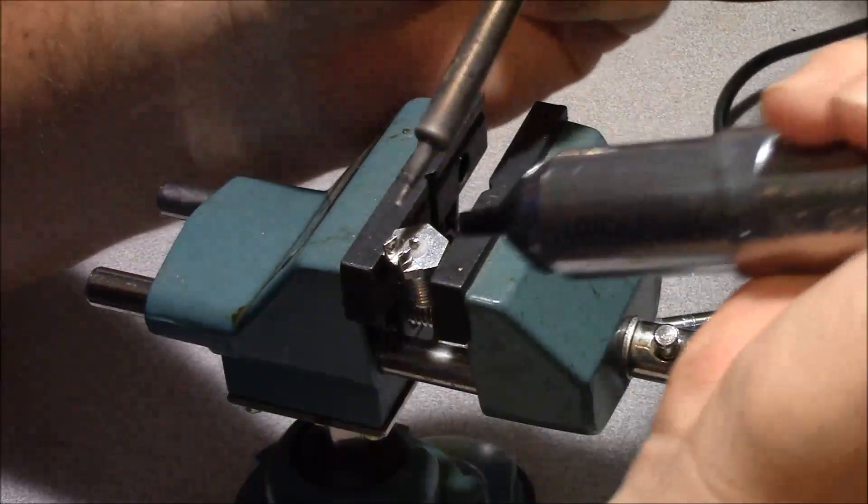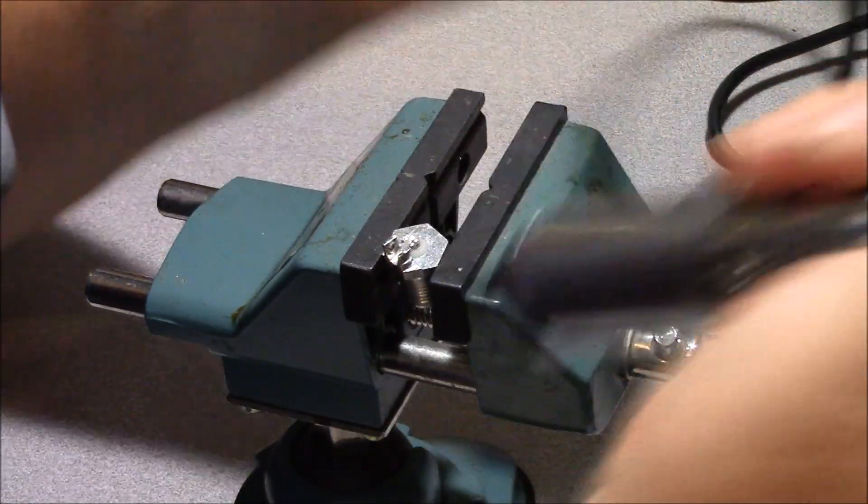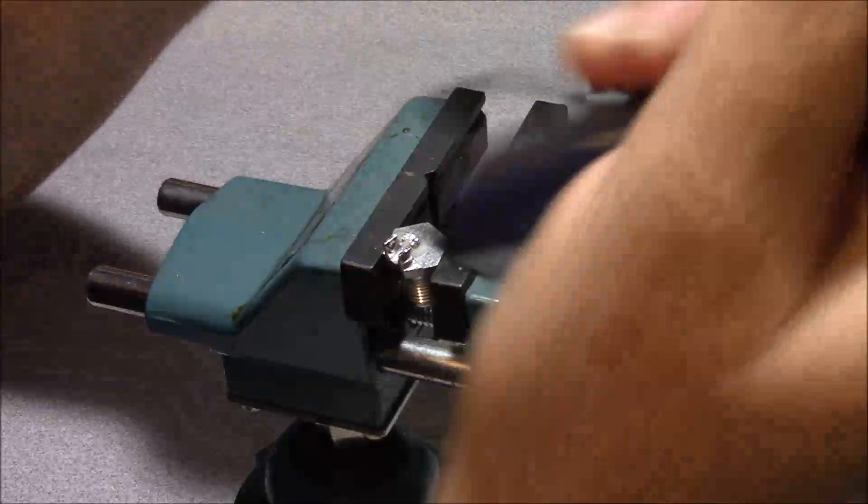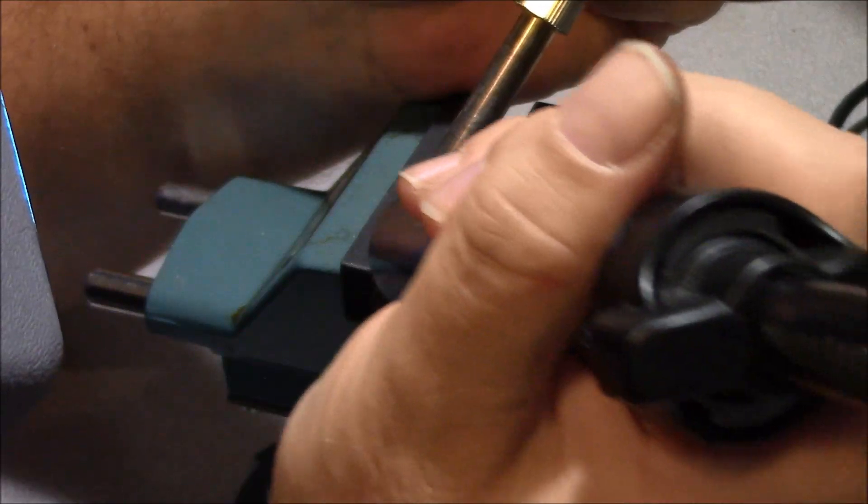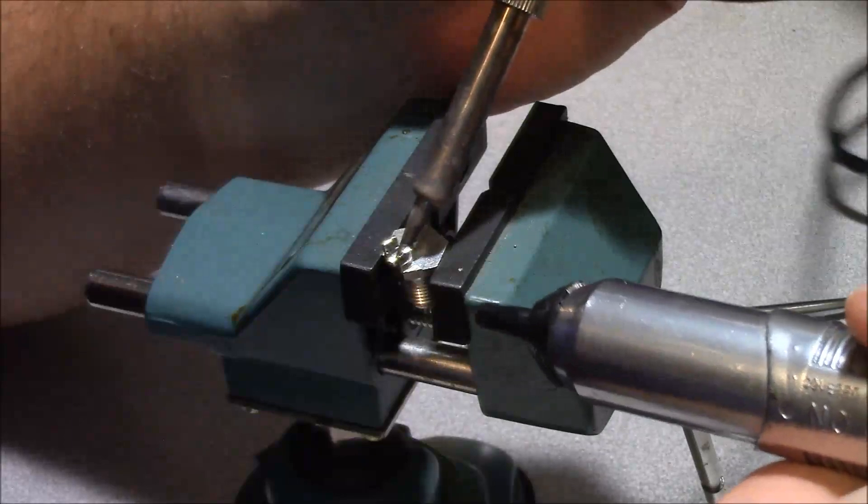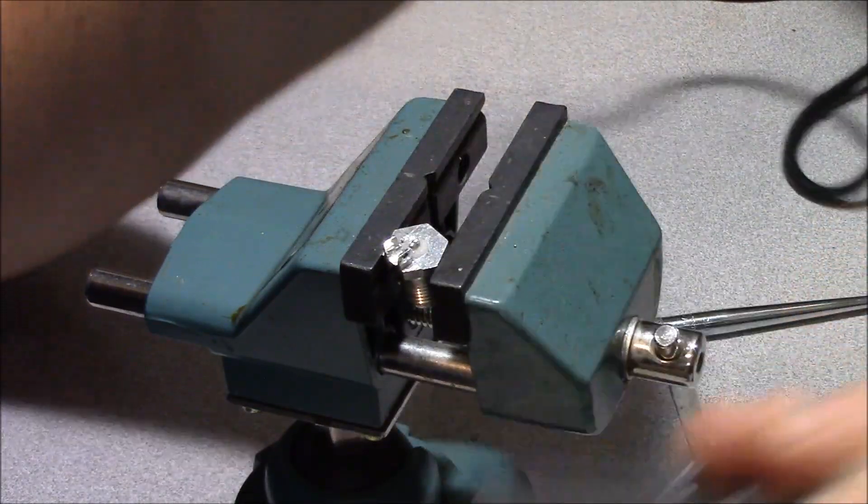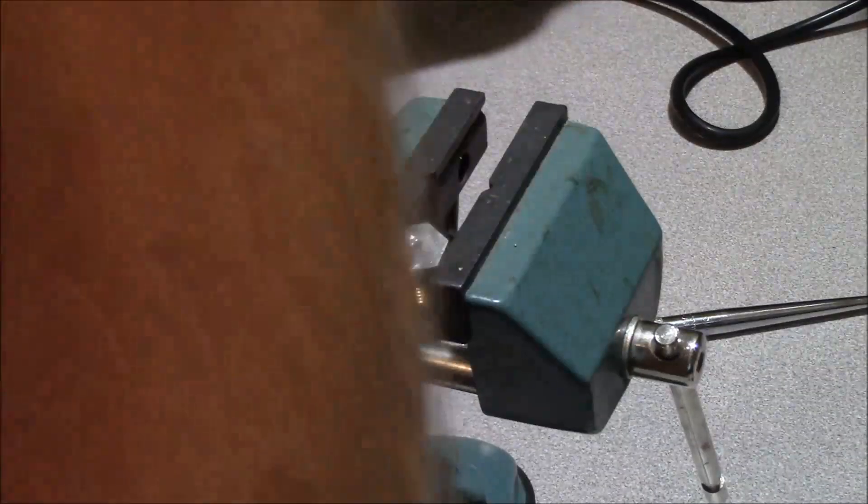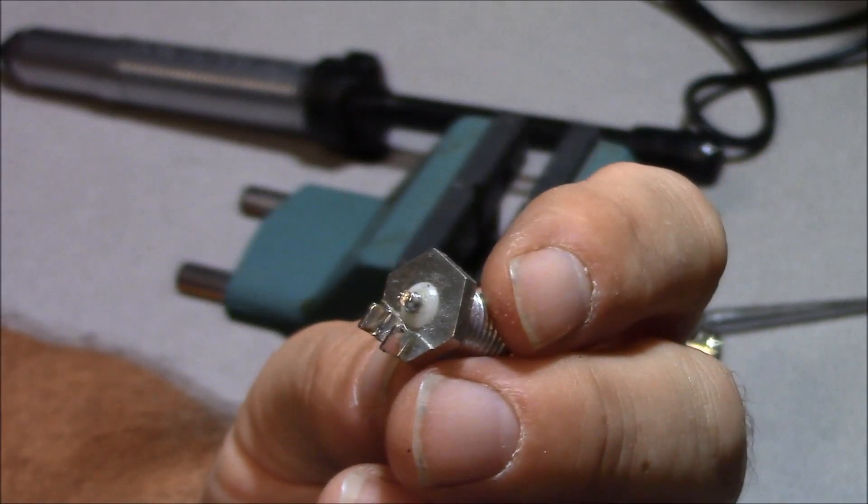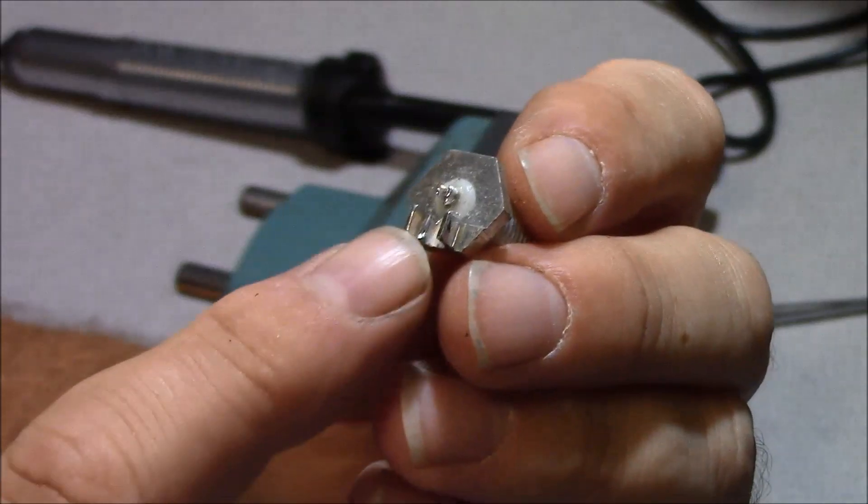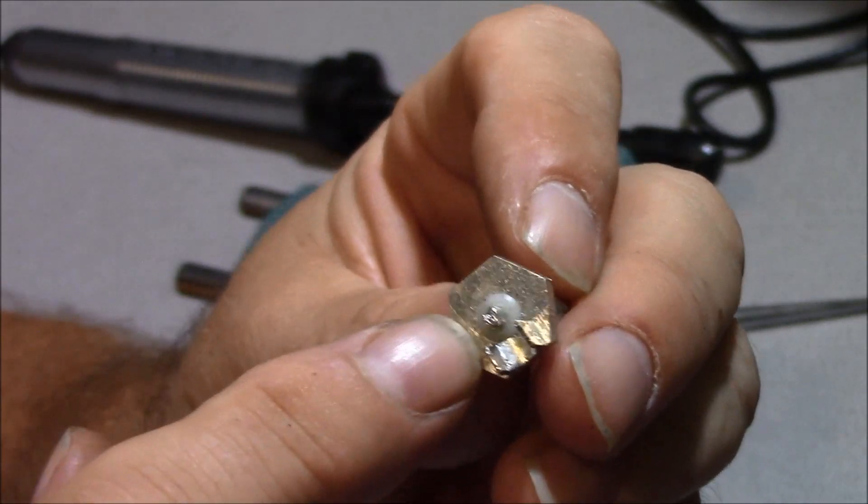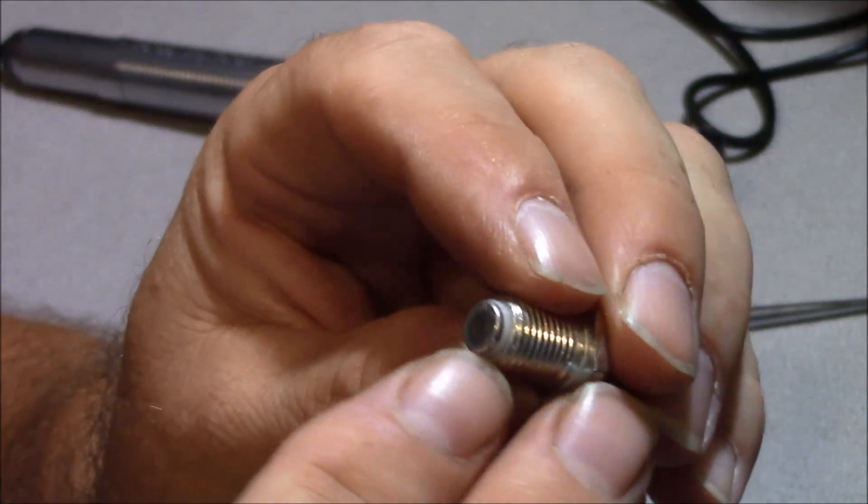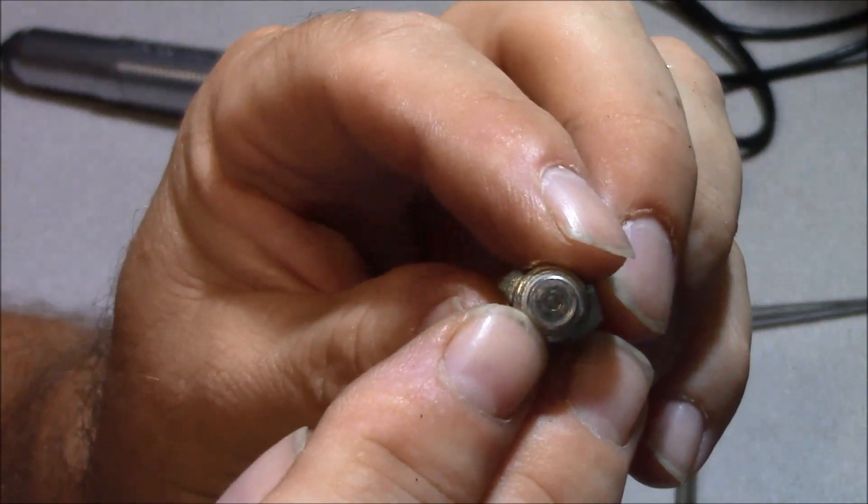Now we can take our desoldering pump and remove the excess solder from the connection. Now you can see we've cleaned up the main body of our connector. The way this works is the shield is soldered to the main body of the connector, and there's a layer of insulation inside of it that holds the center pin, and that's what contacts the radiator of the antenna.